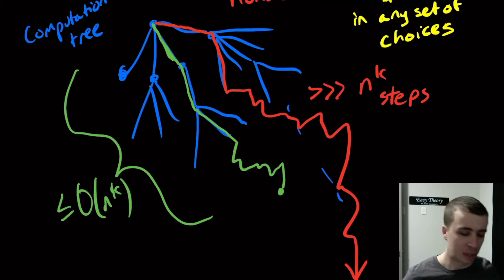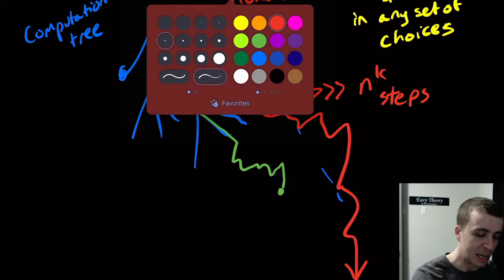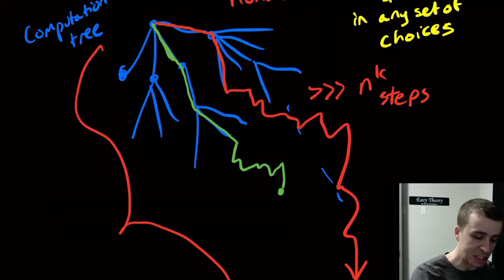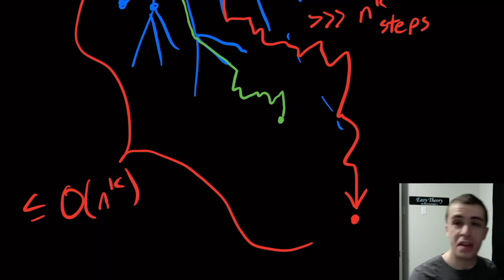So as long as it's not that we care about whether the green one ends in n to the k steps, but the red one, let's say that that's the longest one. Let's say that that one is at most big O of n to the k. Then we will say that this thing runs in non-deterministic time that is polynomial in n, and where k is a fixed number, obviously.